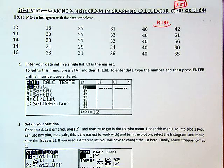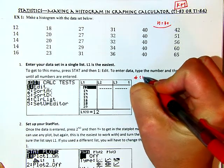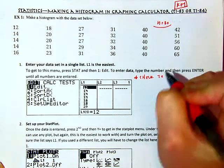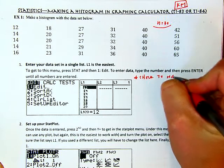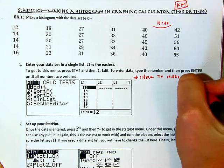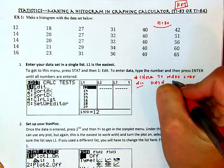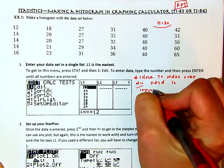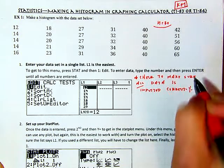So to get to this menu, you hit stat. It's your first choice. Edit. And then to enter the data, you type the number, press enter until all numbers are entered. But I want to also give you this little caveat. You want to check to make sure that you've inputted all data correctly.